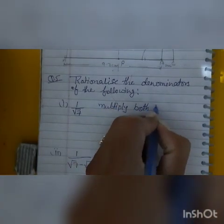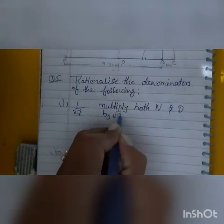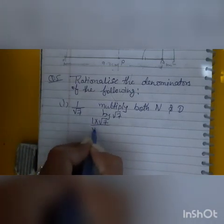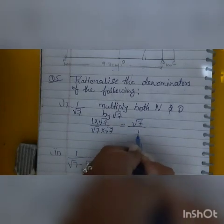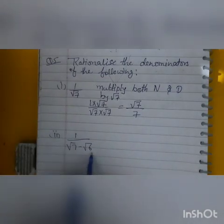Multiply both numerator and denominator by root 7. 1 times root 7 equals root 7. Root 7 times root 7 equals 7. Here is root 7 upon 7.